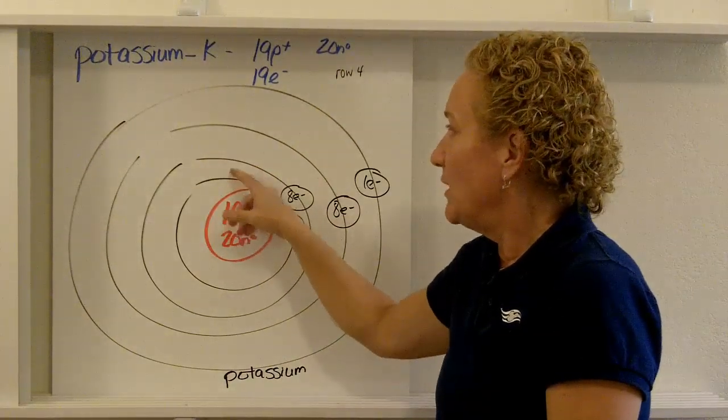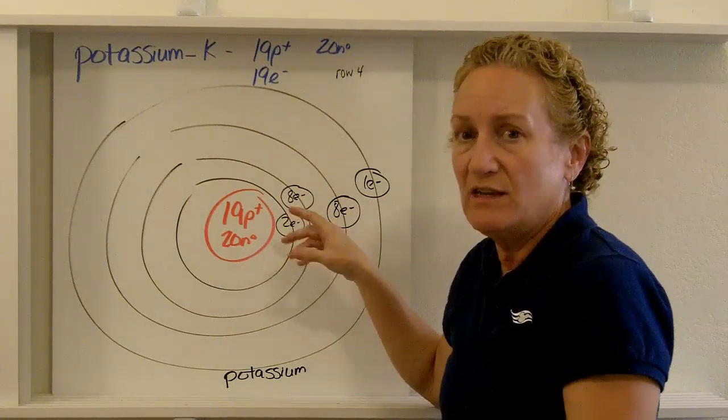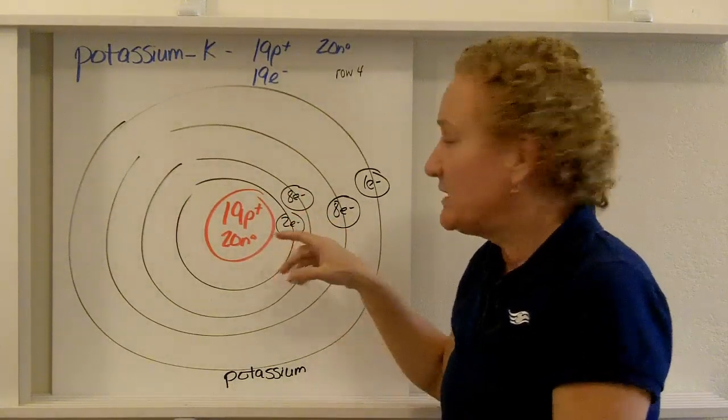So 19 and 20, there's my nucleus. One, two, three, four energy levels. The first one has two. The second one has eight. Those are given. Can't fit any more in there. So I'm up to 10 now.